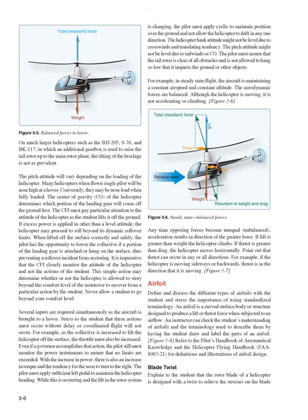On much larger helicopters such as the BH-205, S-76, and BK-117, in which an additional gearbox raises the tail rotor up to the main rotor plane, the tilting of the fuselage is not as prevalent. The pitch attitude will vary depending on the loading of the helicopter. The center of gravity (CG) of the helicopter determines which portion of the landing gear will come off the ground first. The CFI must pay particular attention to the attitude of the helicopter as the student lifts it off the ground. If excess power is applied other than in a level attitude, the helicopter may proceed to roll beyond its dynamic rollover limits. It is imperative that the CFI closely monitor the attitude of the helicopter and not the actions of the student.